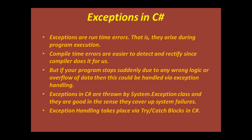Exceptions are runtime errors — they arise during program execution. Compile-time errors are easier to detect and rectify since the compiler does it for us. You might have seen that if there's a typing mistake or compile-time error, there's a red squiggly in our program to display that error. But runtime errors cannot be detected by the compiler and they make our program stop at once.